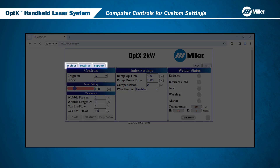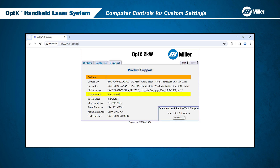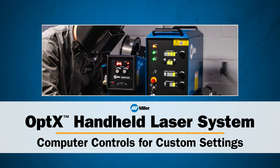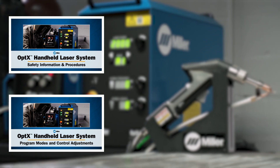Now let's cover the other two tabs on the web page interface, which are Settings and Support. The Settings tab opens the network settings page, where the network IP address configuration for the Optics can be updated. For more information on updating network settings, please refer to the Owner's Manual. The Support tab opens the product support page, where software and firmware revision information is located. This concludes computer control for customized settings for the Optics system. Please watch our other videos for additional operating instructions and laser welding tips.